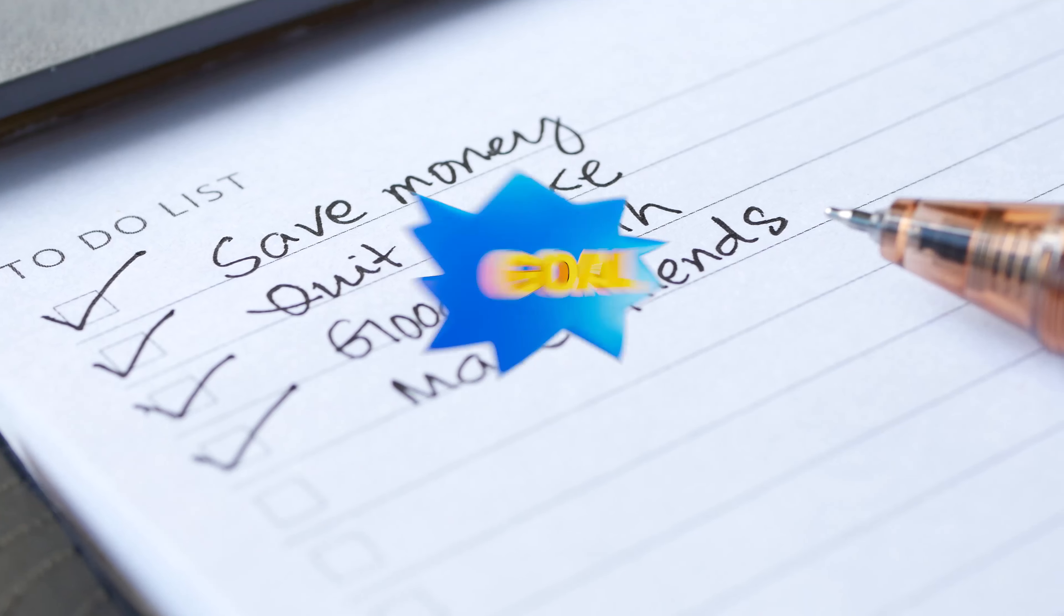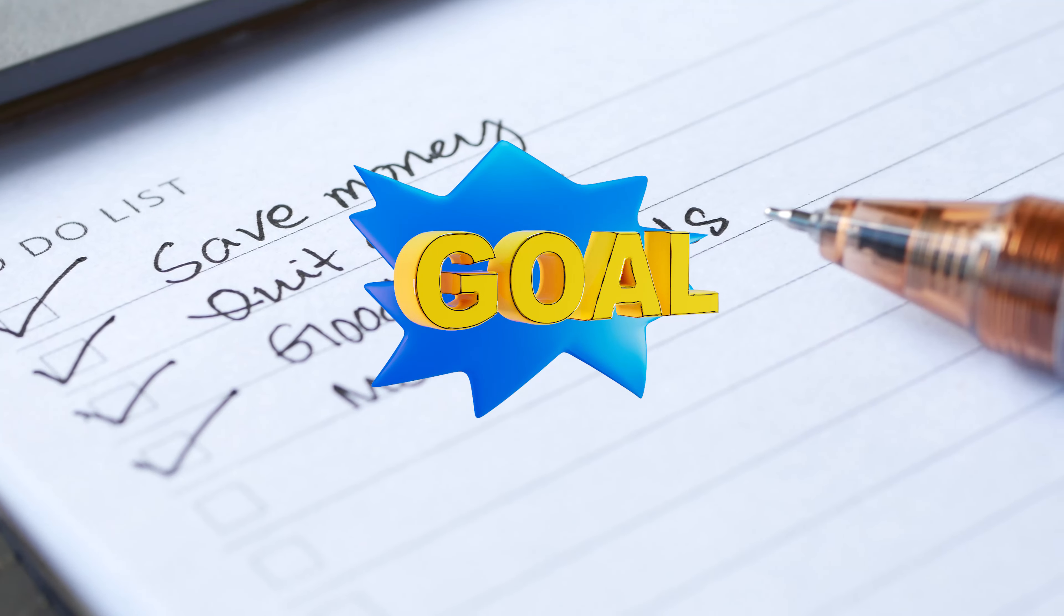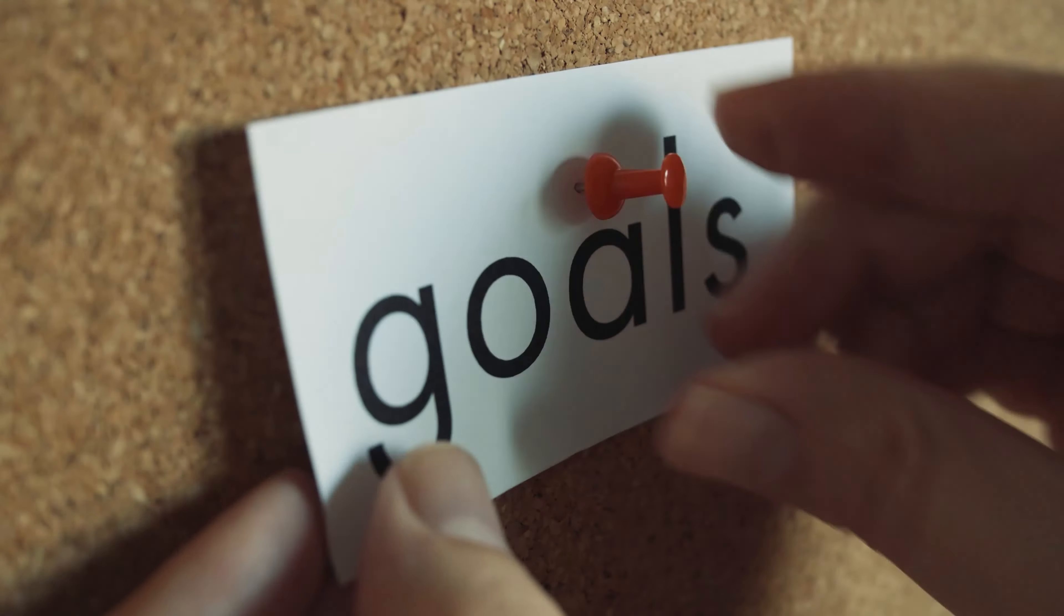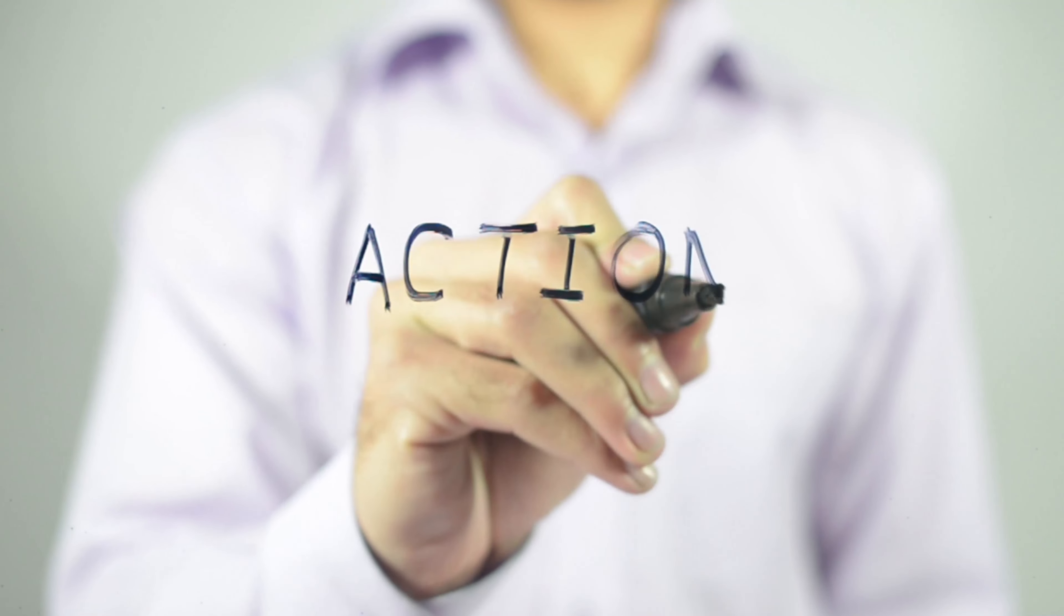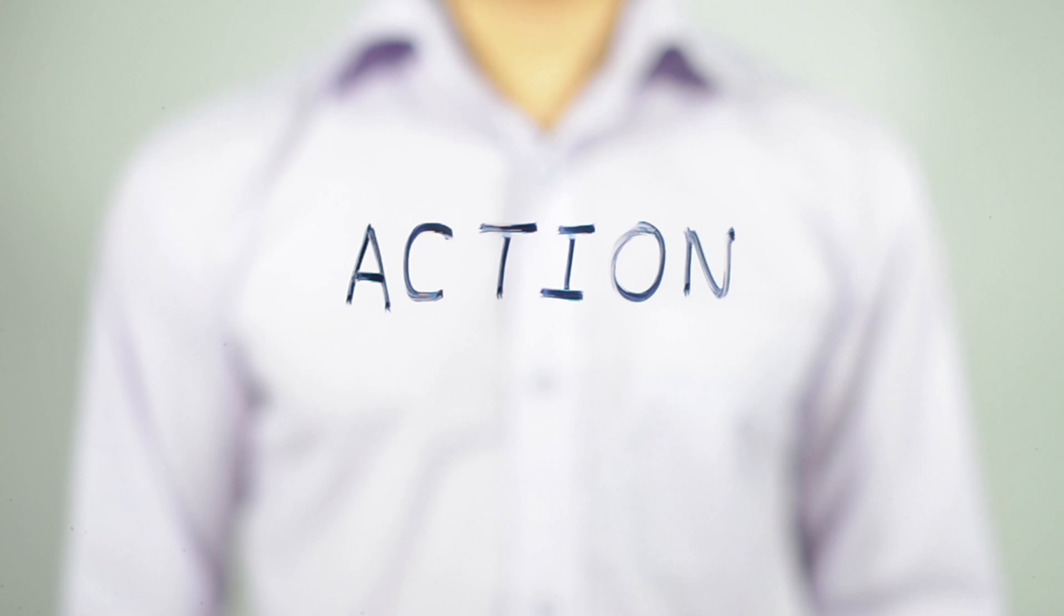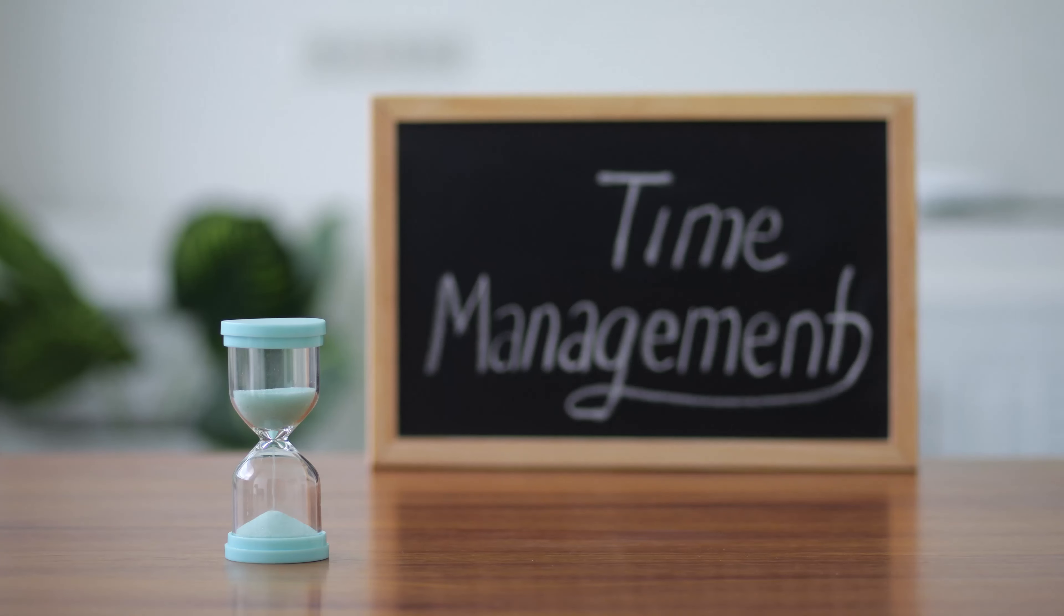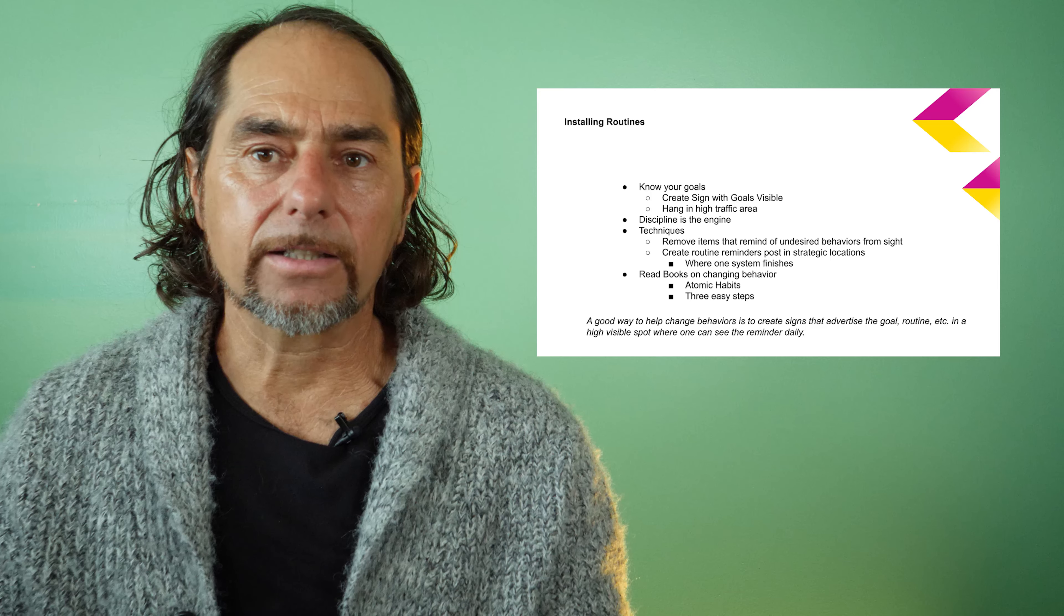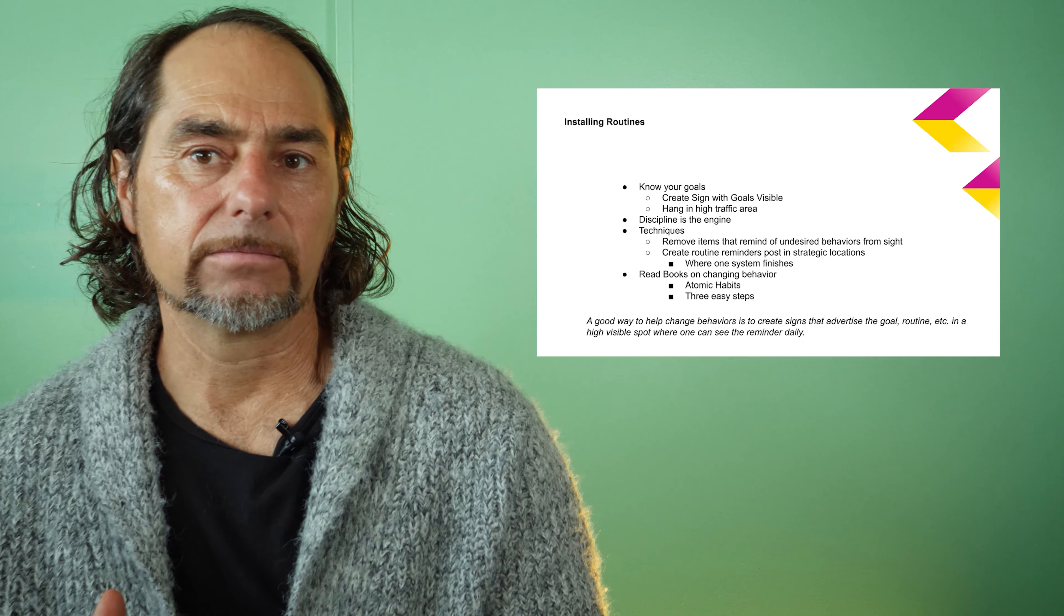They're advertising to us, and that's why they're there. They're effective. The manufacturers are betting on that to make their sales, so why not advertise to ourselves? Create signs that say what it is you're supposed to do, what system or routine you're going to do—probably a system if it's a collection of routines—and when it starts. So I'll give you an example: I will walk my dogs after I finish journaling.